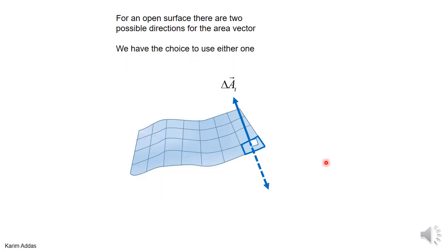For an open surface, there's no concept of inside and outside. You can go from one side to the other without touching the surface, so there's no region you can call inside or outside. This creates an ambiguity: for a given element of area, should the area vector point perpendicular in this direction or the other direction? You have to specify this yourself — there's no standard way of doing it. So for a closed surface the direction is fixed, but for an open surface there is an ambiguity.